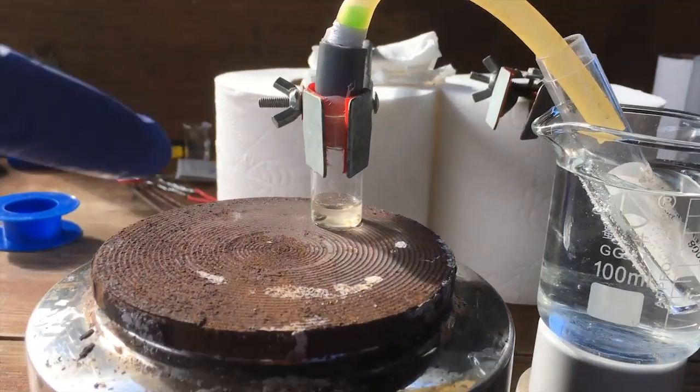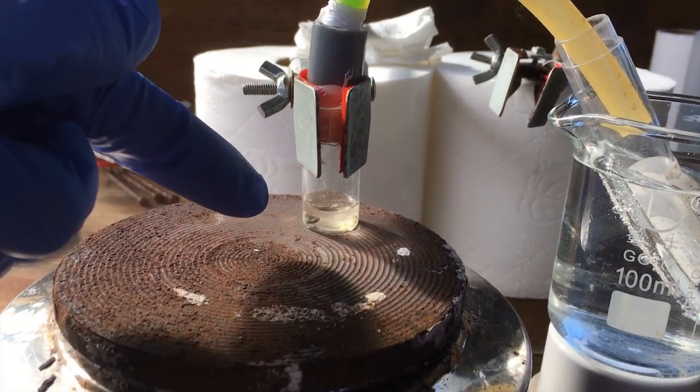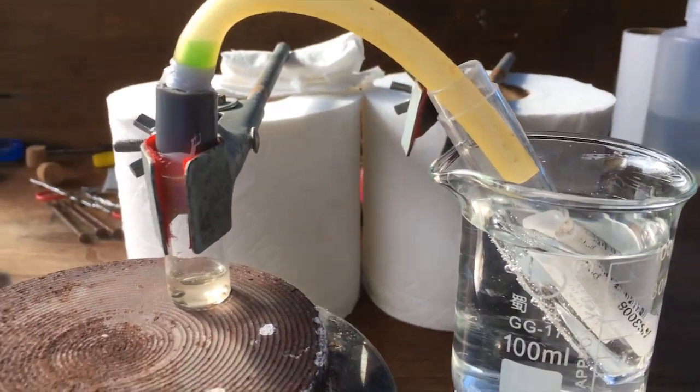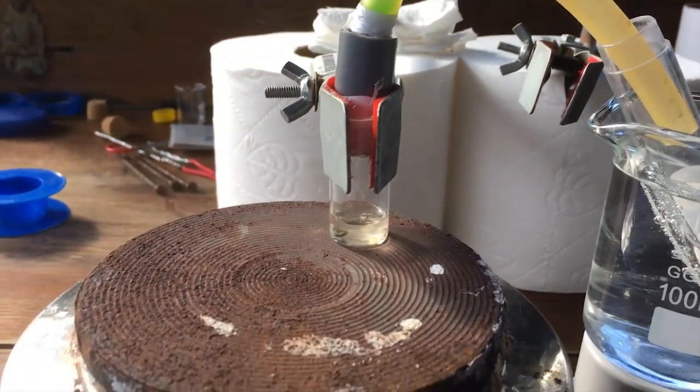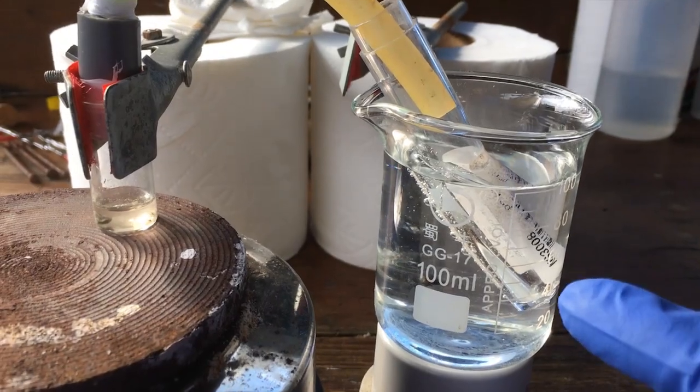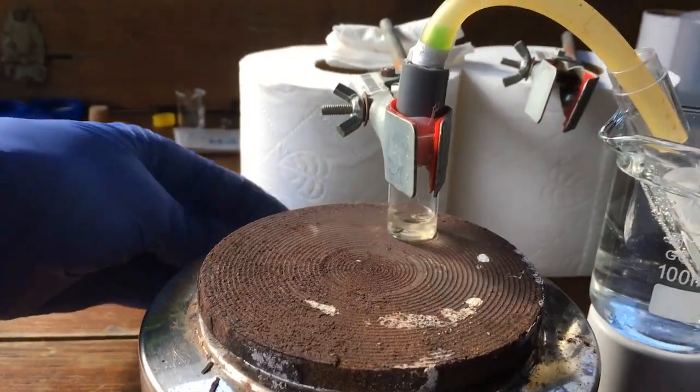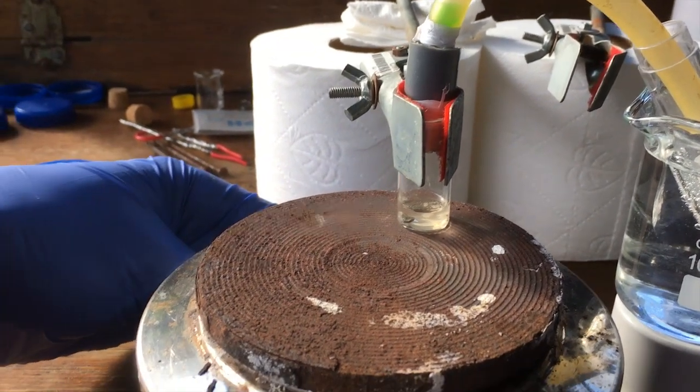Now this is all set up. We've got our water in the flask here. We've got our condenser tube, nice and short. Hopefully we'll get most of the water out. We've got our collection flask over here in this nice cold water. All we have to do is turn on the hot plate and wait for it to boil.